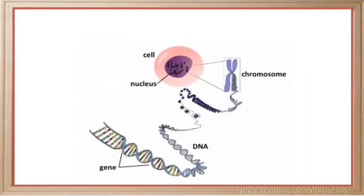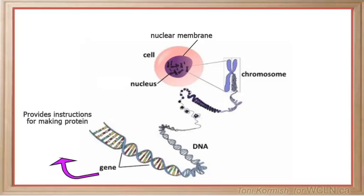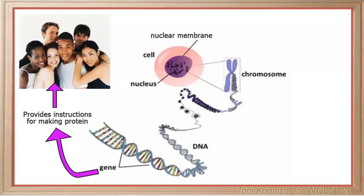Looking at this diagram, we can see that the nuclear membrane separates the nucleus from the cytoplasm. We know that the genetic information, or in other words our genes, are found on these DNA strands that are confined to the nucleus. A gene provides the instructions for making a protein and proteins influence our characteristics.